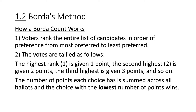In this video, we're going to be talking about Borda's method. The way a Borda count works is: first, voters rank the entire list of candidates in order of preference from most preferred to least preferred. Next, the votes are tallied as follows: the highest rank is given one point, the second highest is given two points, the third highest is given three points, and so on. The number of points each choice has is summed across all ballots, and the choice with the lowest number of points wins.